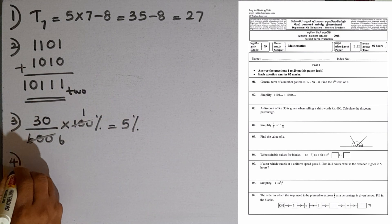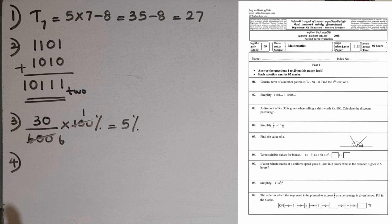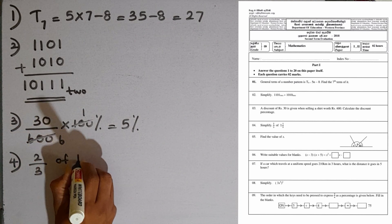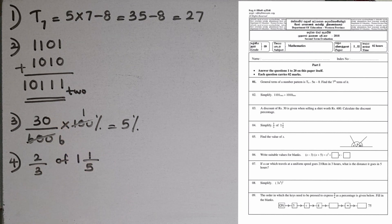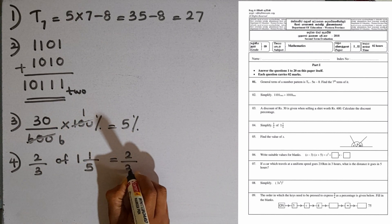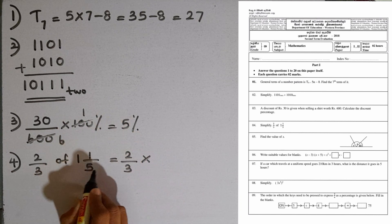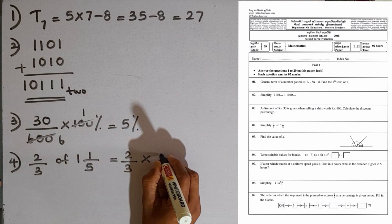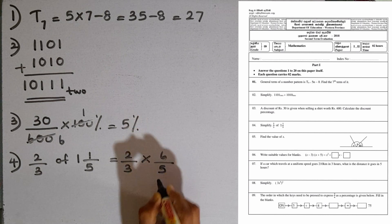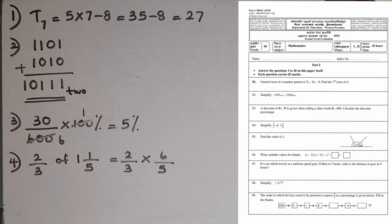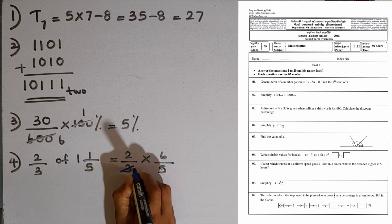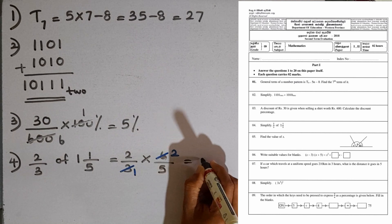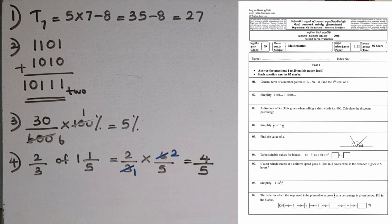Question number 4: simplify 2 over 3 of 1 and 1 over 5. The word 'of' means multiplication. First, convert the mixed number to an improper fraction: 5 times 1 plus 1 is 6, so it becomes 6 over 5. Then simplify the common terms: 3 cancels, giving 2 times 2 over 5 times 1, which equals 4 over 5.